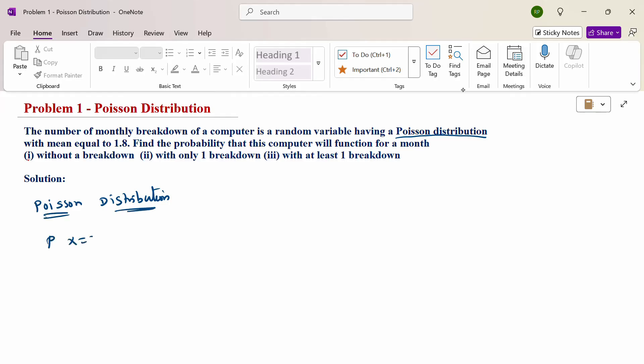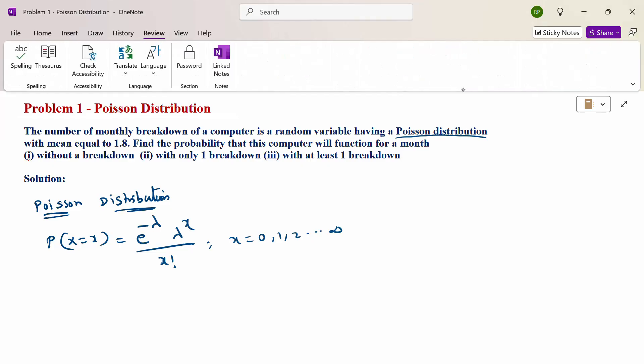Probability of x equals e power minus lambda, lambda power x by x factorial, where x equals 0, 1, up to infinity.